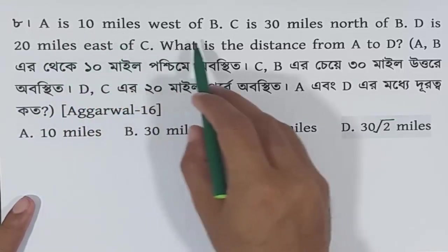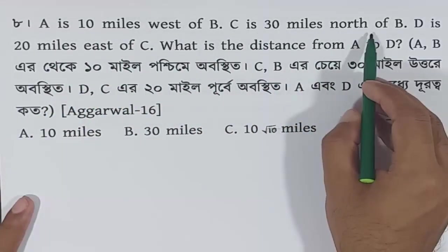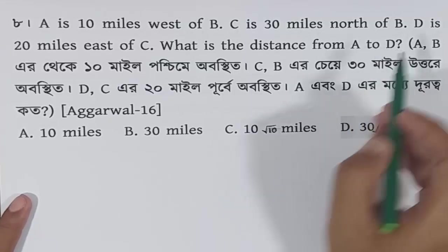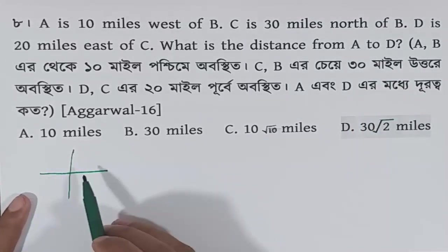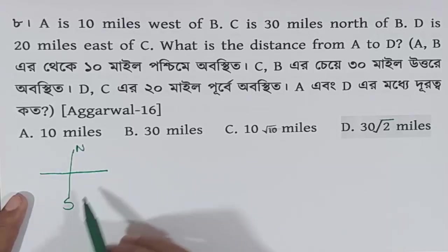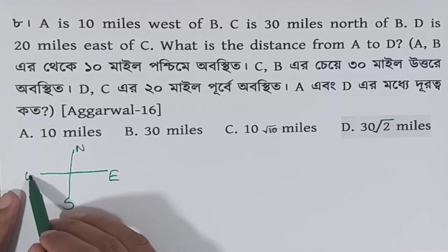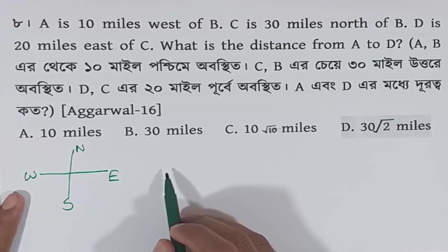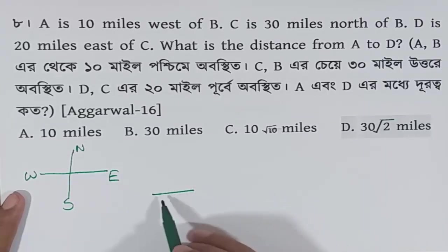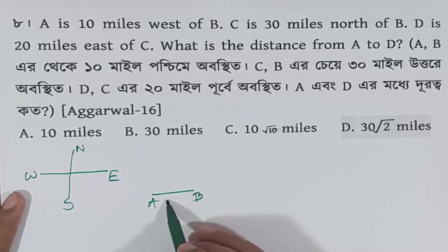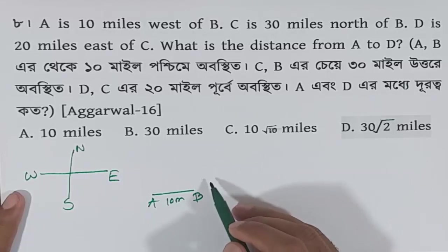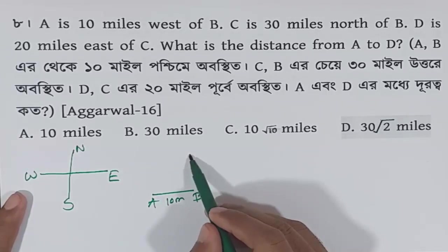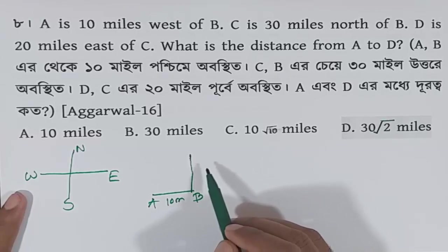The next question: A is 10 miles west of B. C is 30 miles north of B. D is 20 miles east of C. What is the distance from A to D? We can see that north, south, east, and west indicate the directions. A is 10 miles west of B, and C is 30 miles north of B.